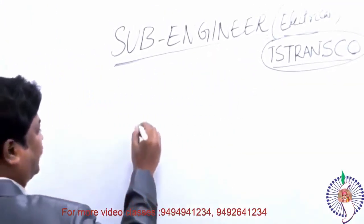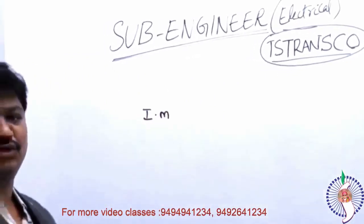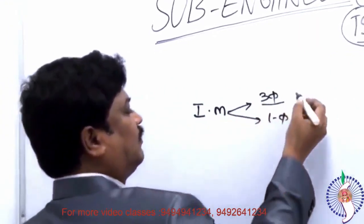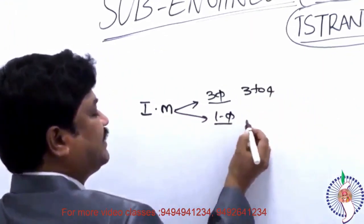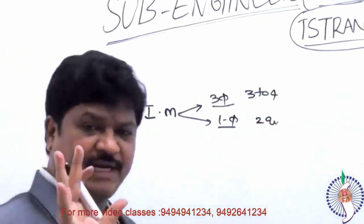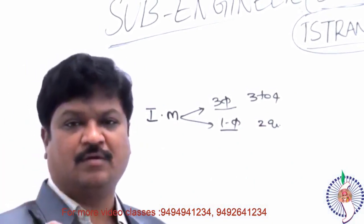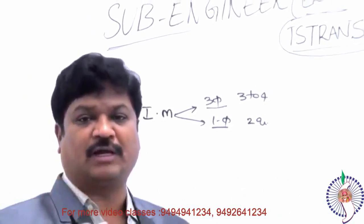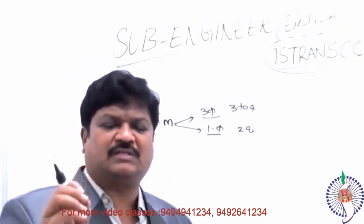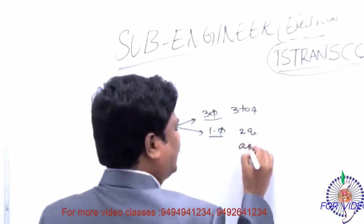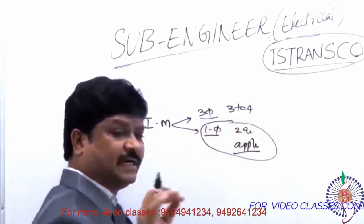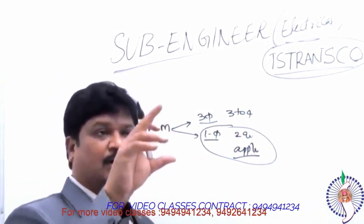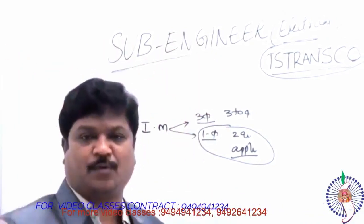The next topic is induction motors — both three-phase and single-phase. In three-phase, you can expect nearly three to four questions. In single-phase, there are about two questions. For single-phase: capacitor-start motor — where is the capacitor placed and its use; shaded pole motor. Prepare a table for single-phase induction motors: capacitor-start, capacitor-run, shaded pole, repulsion motor — their applications, speeds, and starting torques.